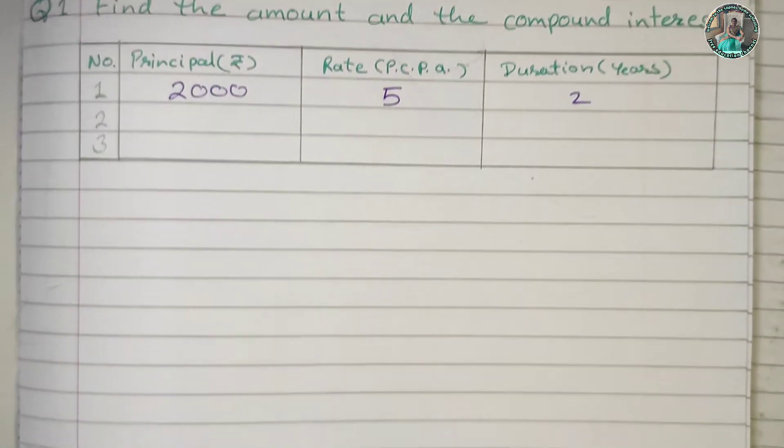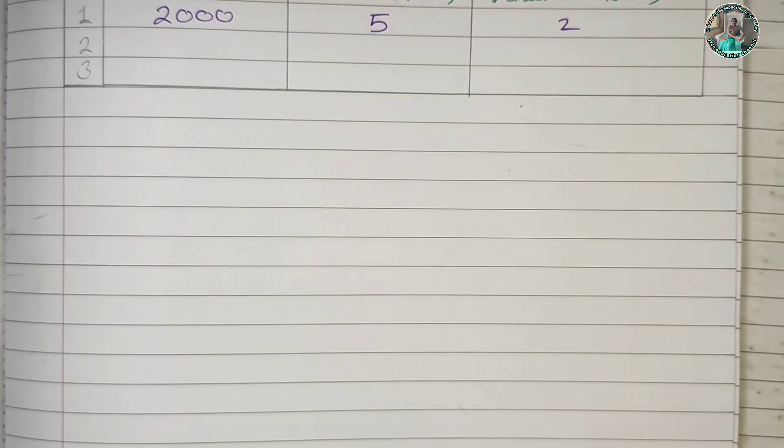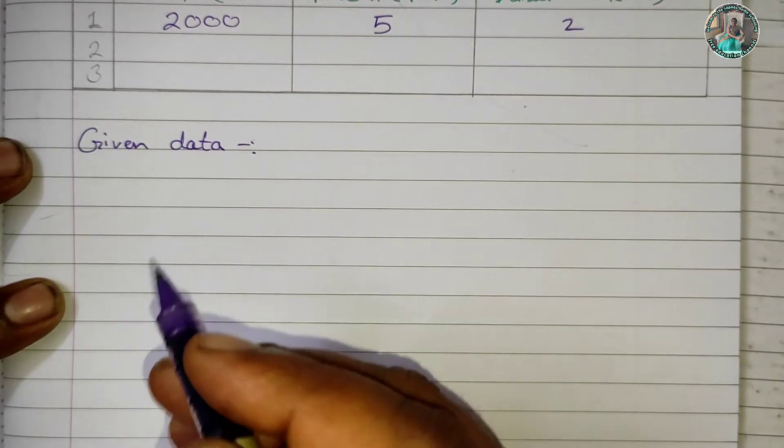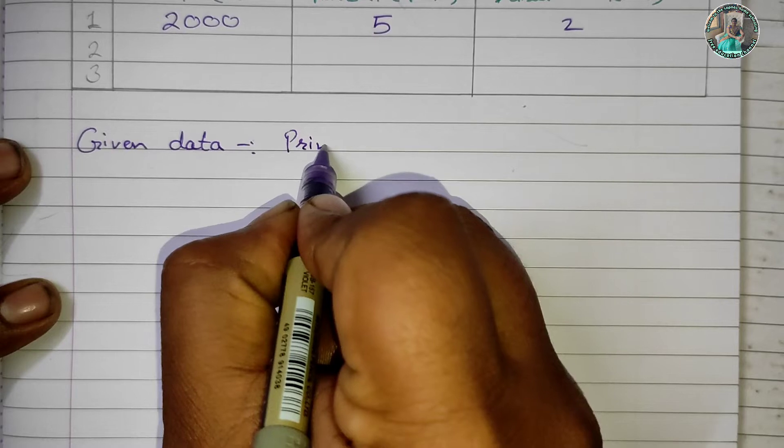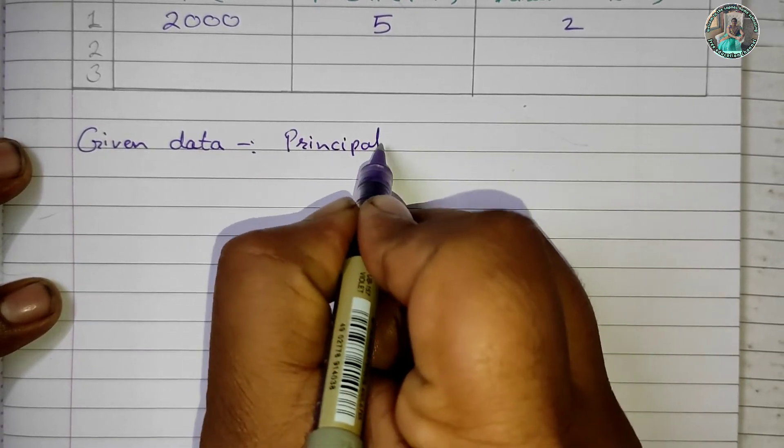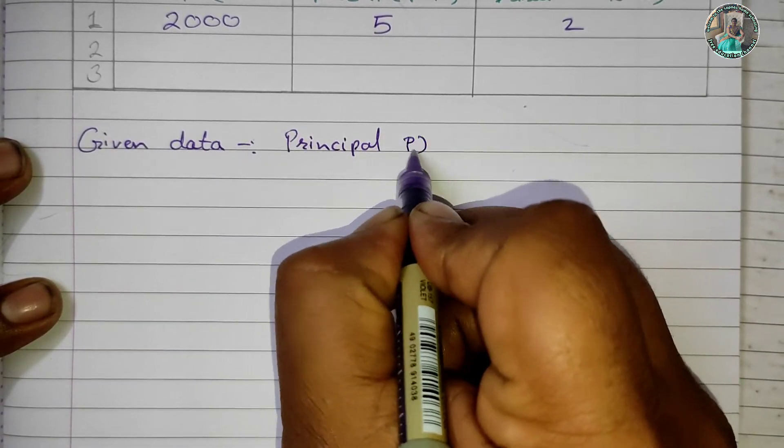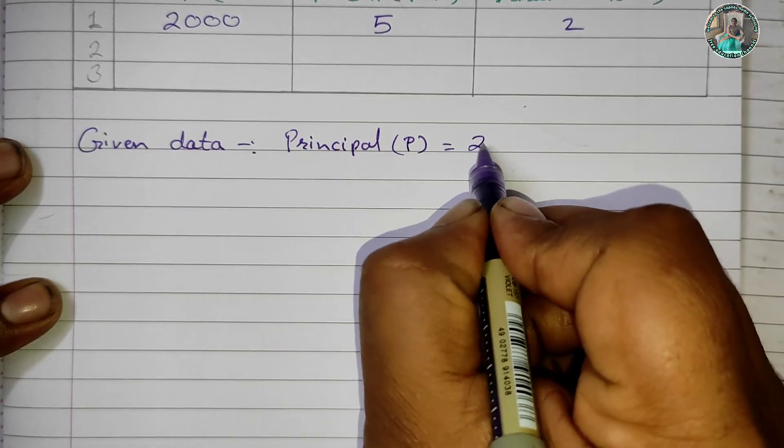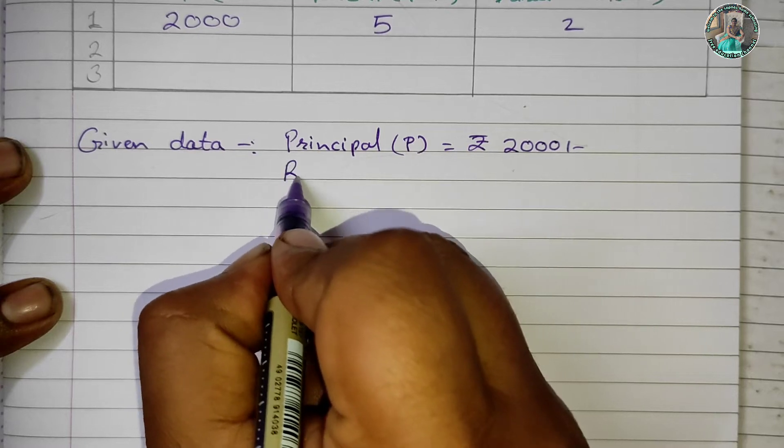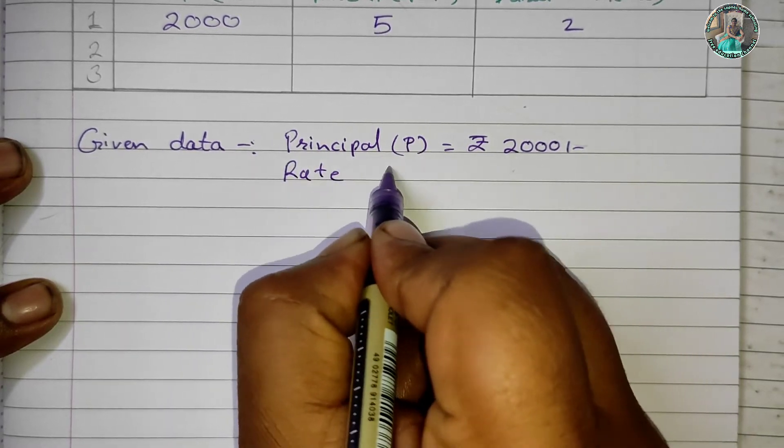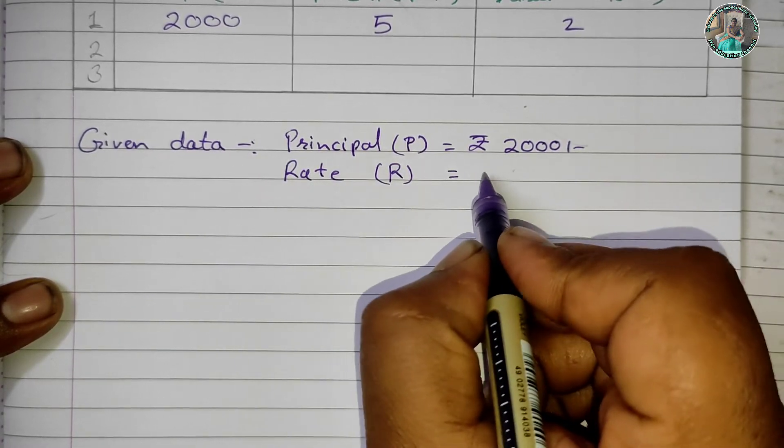Let's start. What is the given data? The principal P is Rs. 2000. The rate R is 5% per annum.